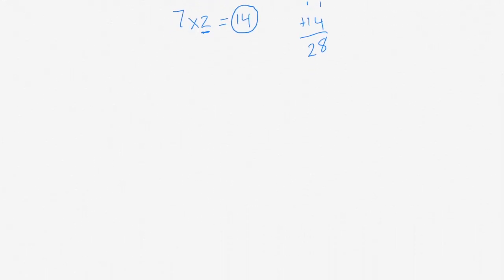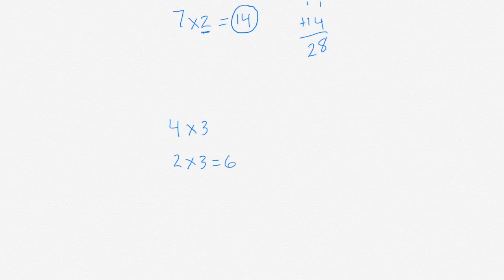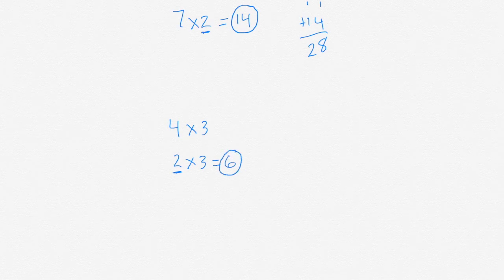Let's say I had 4 times 3. I can think of this as 2 times 3, which I know is 6. I then have to double my product of this doubles fact.